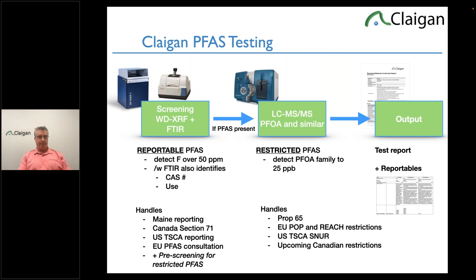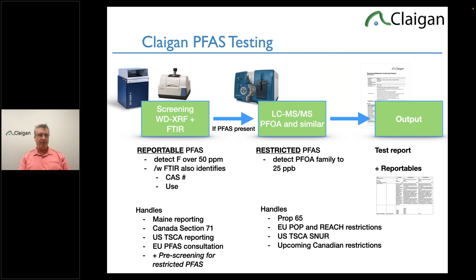FTIR won't find 50 ppm of fluorine, but it will tell you what material it is — that helps us understand why it's there. Since all these restrictions can be derogation-based and exemption-based on uses and applications, we need to know what material it is. Not just that it's there, but why it's there, because otherwise we can't use the exemptions. We tell you 'here are the 30 instances and this is why they're there.'